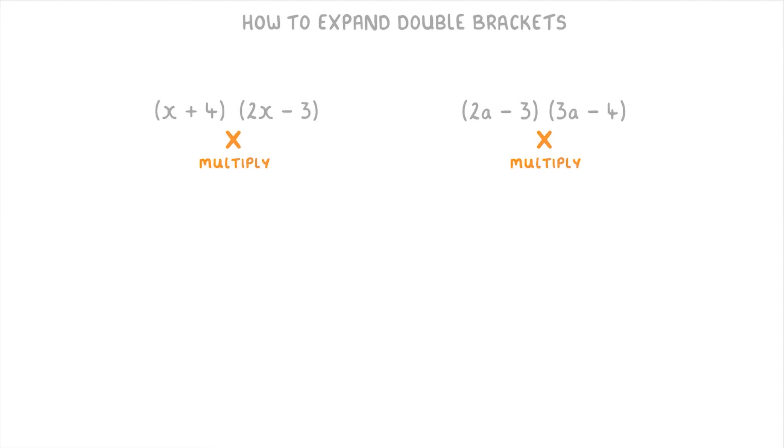The key thing to remember when you're multiplying out brackets like this is you have to multiply all of the terms in the first bracket by all of the terms in the second bracket.